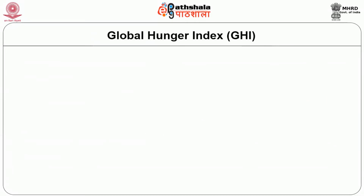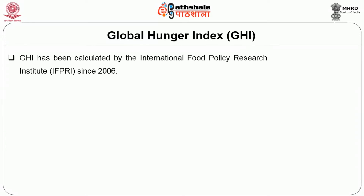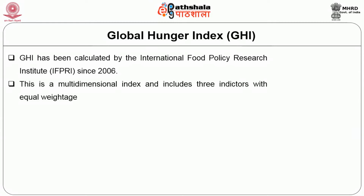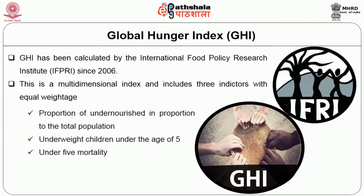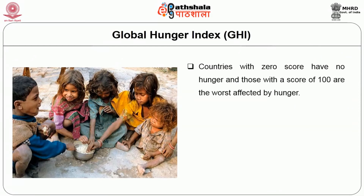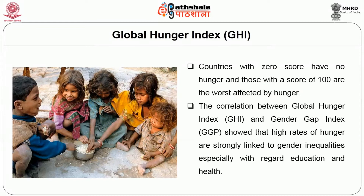The Global Hunger Index, GHI, has been calculated by IFPRI since 2006. It is a multi-dimensional index including three indicators with equal weightage: the proportion of undernourished in the total population, the proportion of underweight children under age 5, and the under-5 mortality rate. Countries with a score of 0 have no hunger and those with a score of 100 are worst affected. The correlation between the Global Hunger Index and Gender Gap Index shows that high rates of hunger are strongly linked to gender inequalities, especially in education and health.